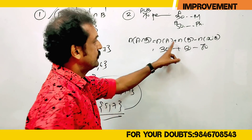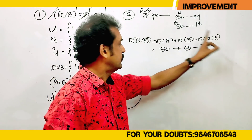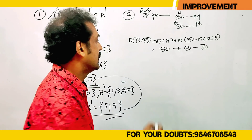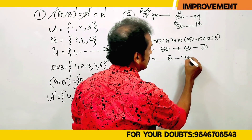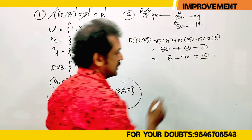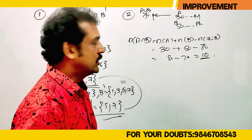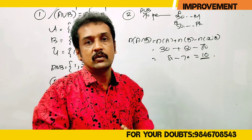n(A) plus n(B) minus n(A union B) gives us the intersection number. The answer is 80 minus 70, which equals 10. So 10 students study both maths and physics.